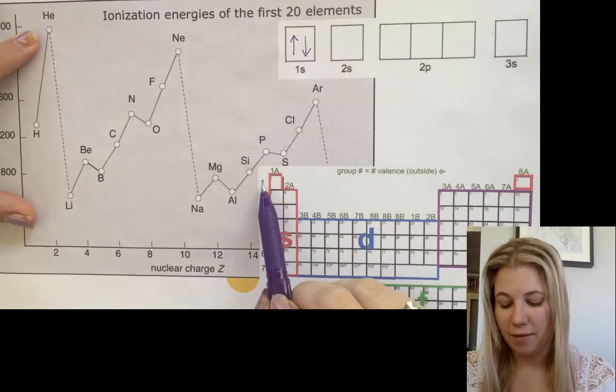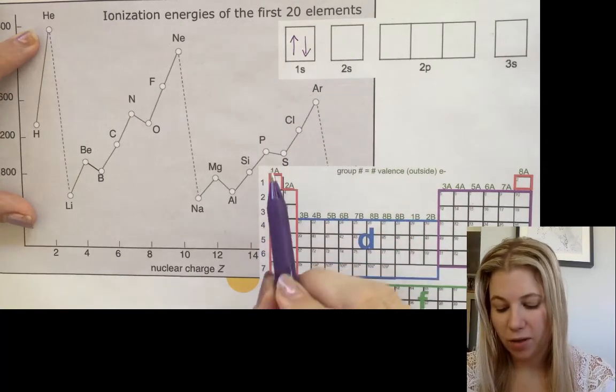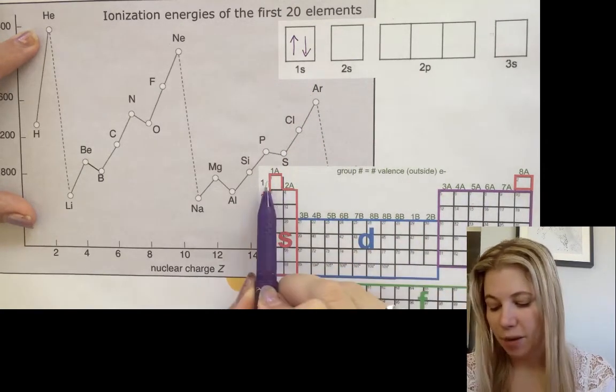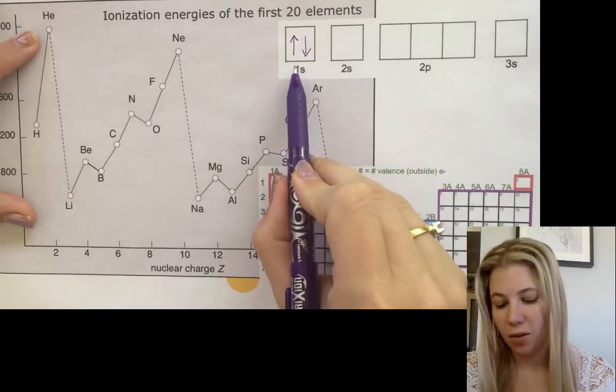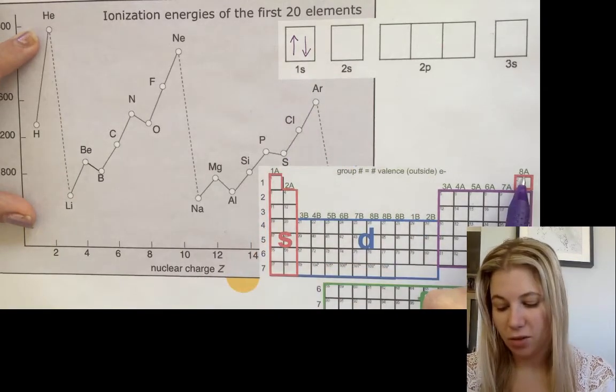And so the 1S, the 1 is referring to the fact that it's actually in period one. So 1S2, there's now two electrons in there and that's now full.